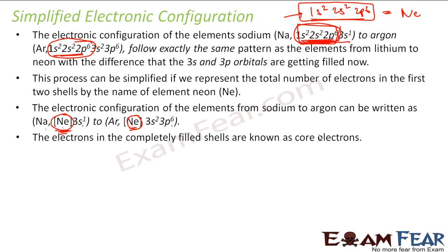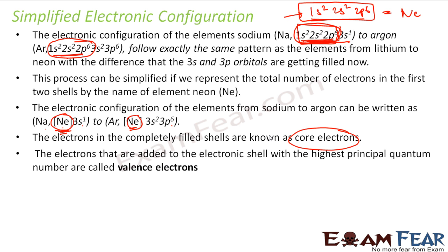The electrons in completely filled shells are called core electrons. The electrons added to the electronic shell with the highest principal quantum number — that is, the electrons in the outermost orbit — are called valence electrons. They are easily removed, so when ionization energy is applied, they are the ones that come out first.